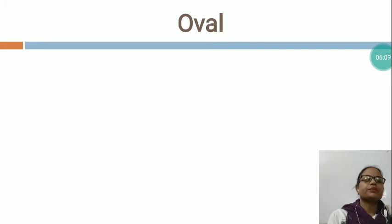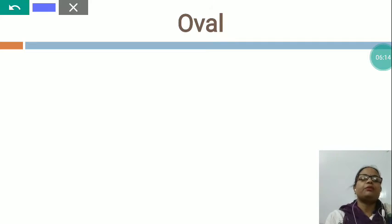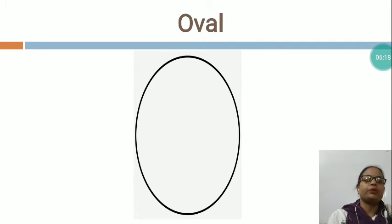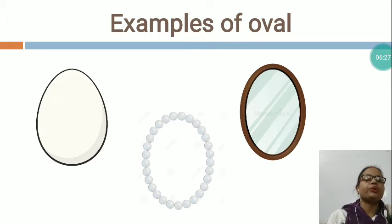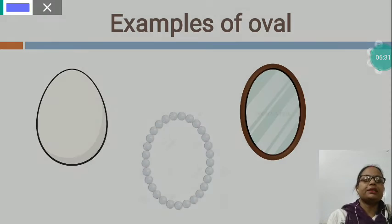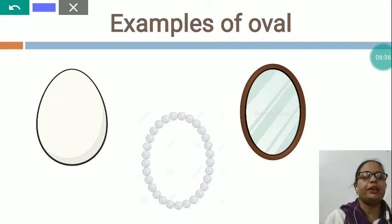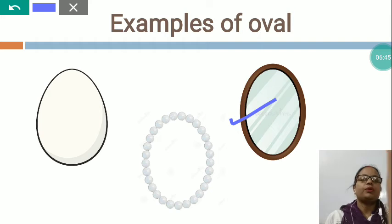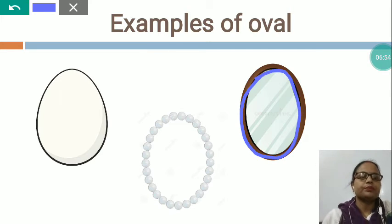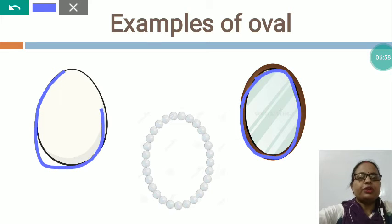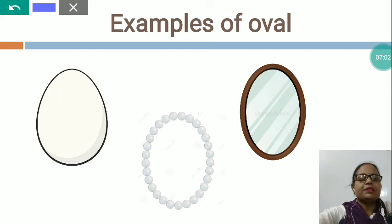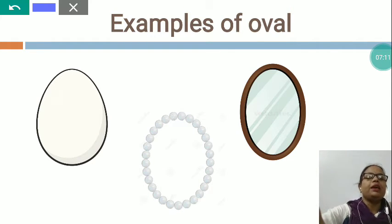Now the next is OVAL. I would like to show you this is the picture of oval. Now I would like to show you some examples of oval. What is this? Egg — what is the shape of an egg? The shape of an egg is oval. Now this is a mirror — what is the shape of a mirror? Oval shape. And this egg also — which shape? Oval shape. Now this is a necklace — what is the shape of this necklace? Oval shape. These all are the examples of oval.